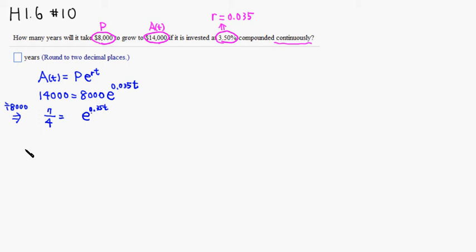Then we can apply natural log to both sides. You have natural log of 7/4 equals natural log of e to the 0.035t. Remember that when you compose natural log and exponential function with e, they cancel out each other because they're inverses. So this is going to be simply 0.035t.